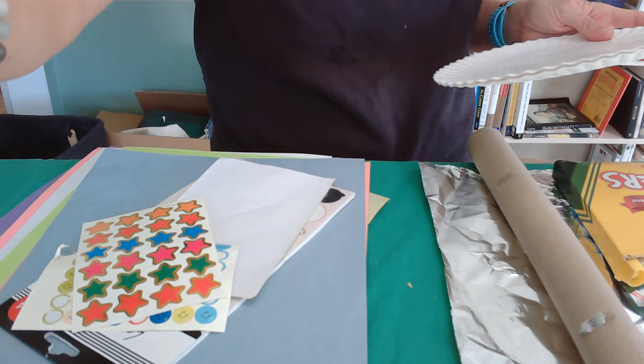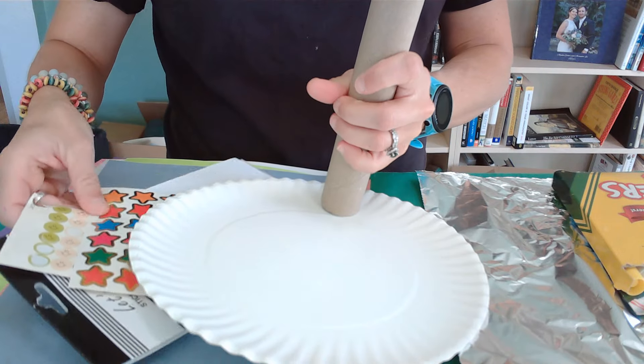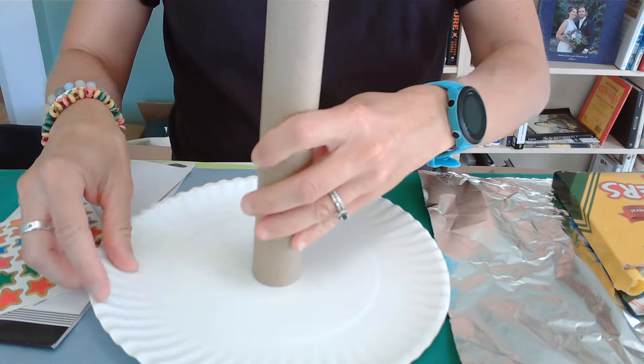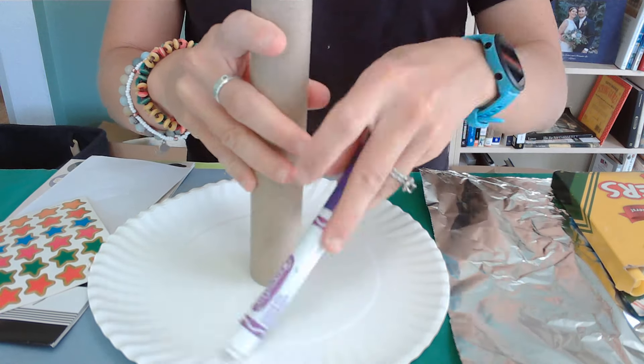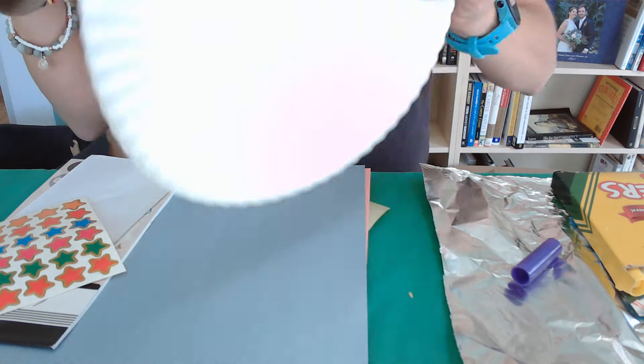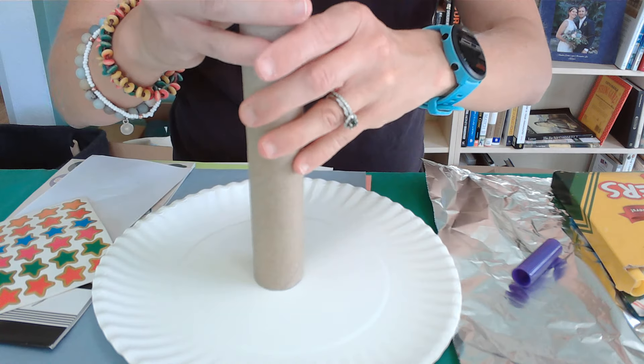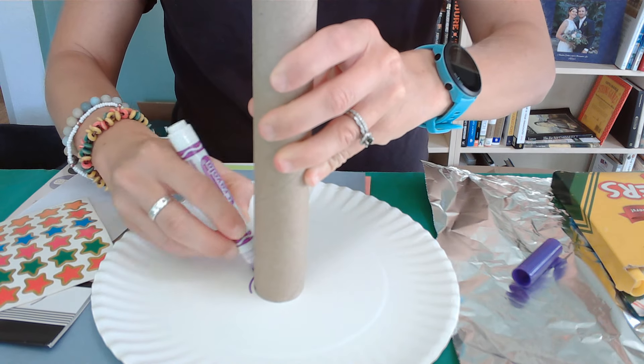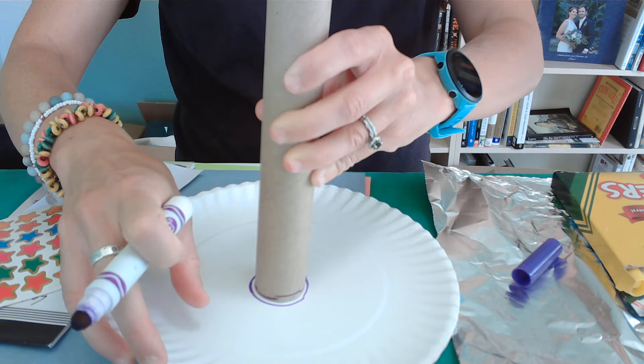So we're going to start off by using the tube to trace and cut a hole in a paper plate so that it can slide through. So I want that hole to be about the same size as my tube.